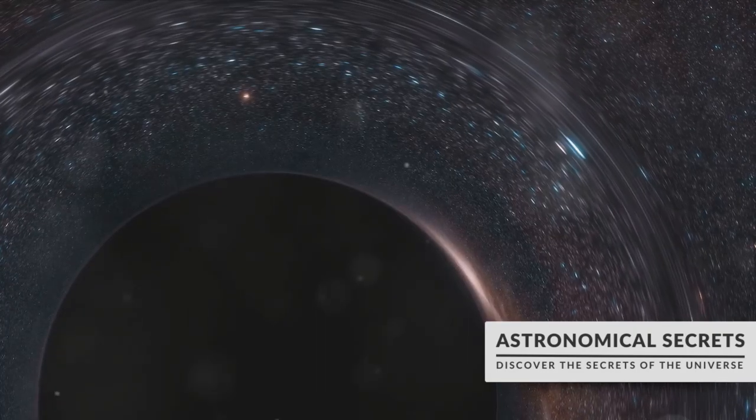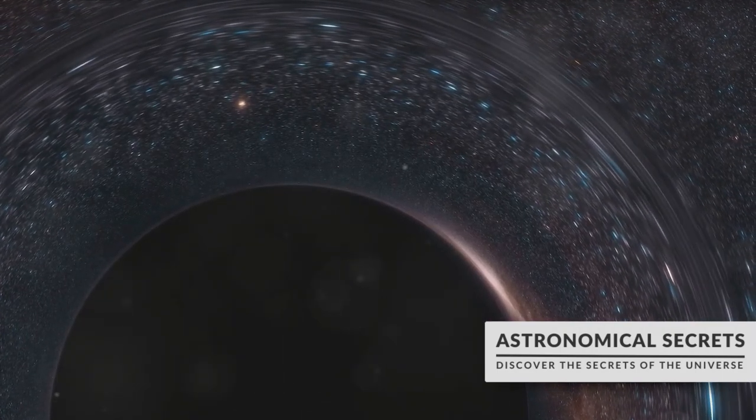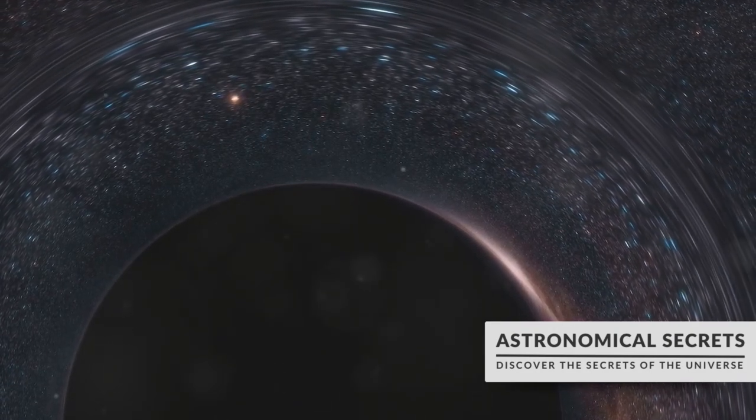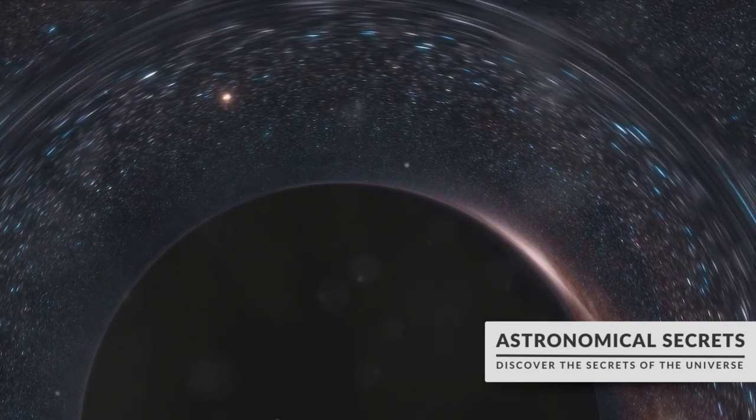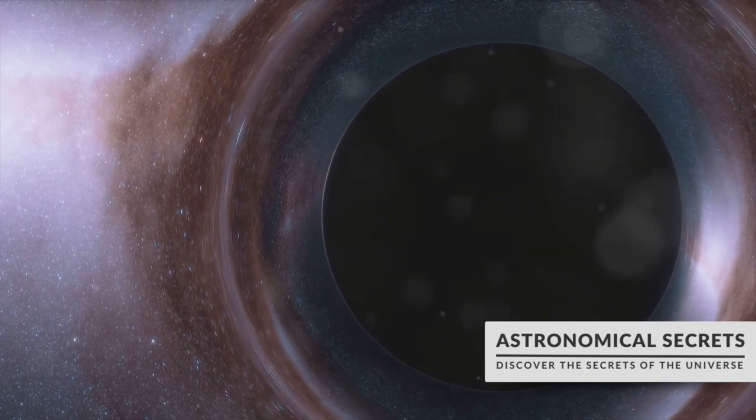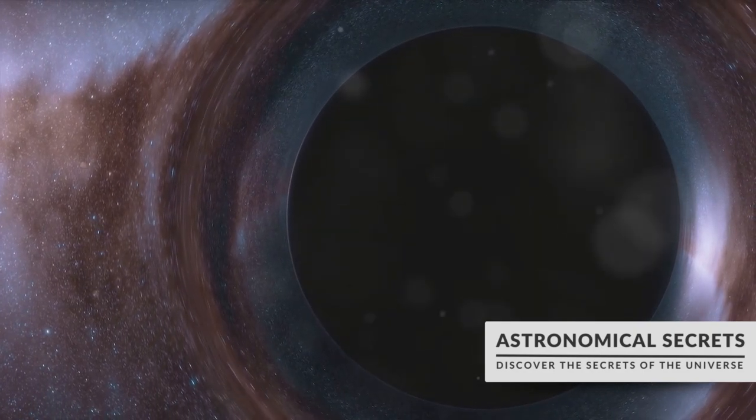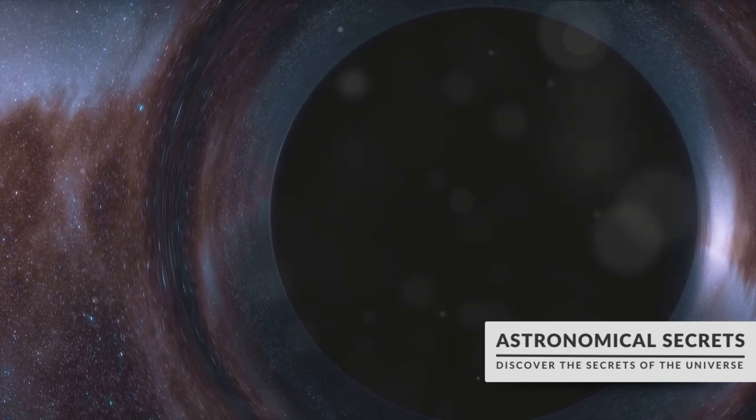Now let's talk about the event horizon. A term that sounds like it's straight out of a science fiction novel. But in the realm of supermassive black holes, it's very much a reality. The event horizon is the point of no return. It's the boundary around a black hole beyond which nothing can escape the gravitational pull. Once an object crosses this threshold, it's destined to be pulled into the black hole, never to be seen again.